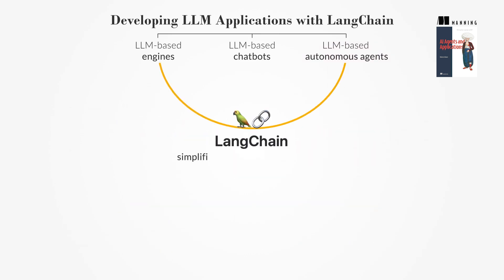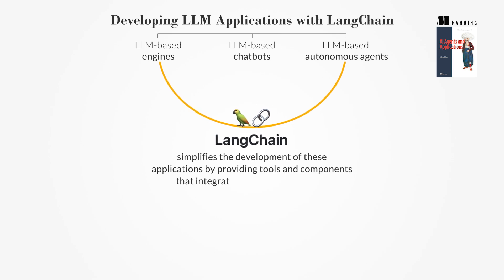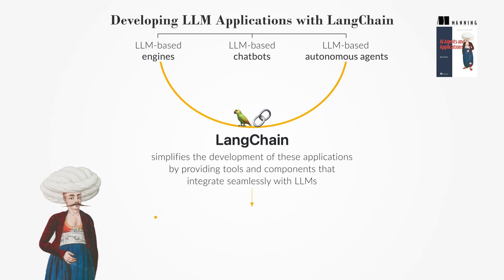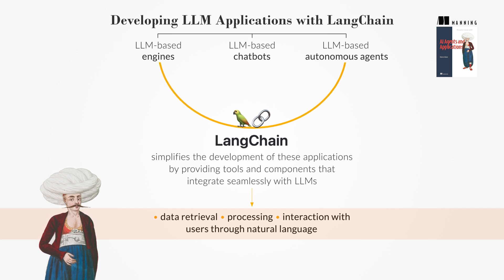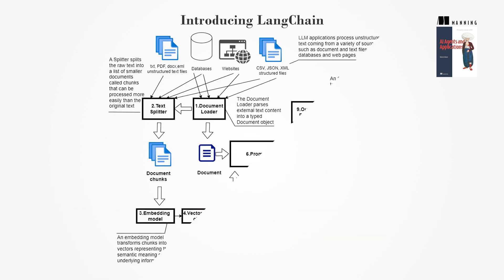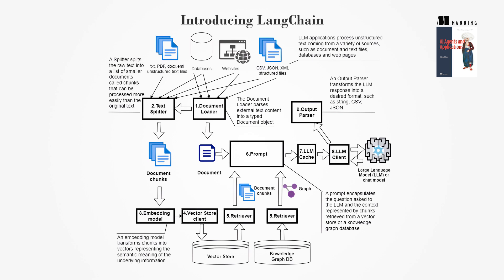LangChain simplifies the development of these applications by providing tools and components that integrate seamlessly with LLMs. It supports various operations from data retrieval and processing to interaction with users through natural language. LangChain is an open-source framework designed for building LLM applications with a modular architecture, allowing easy integration of components like data loaders, text splitters, embedding models, and LLMs.